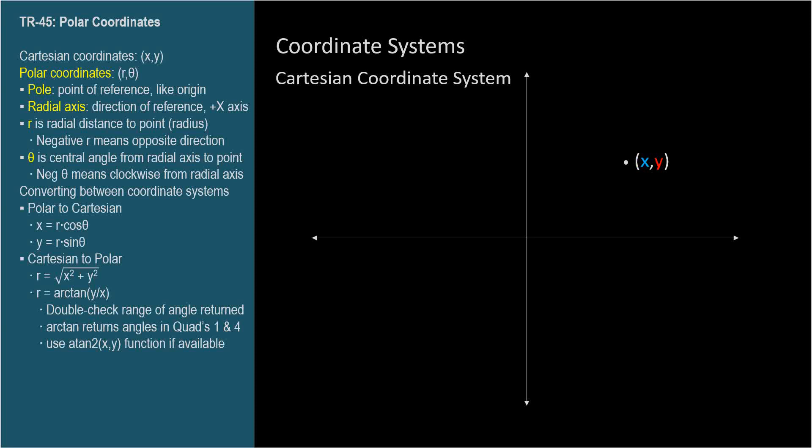The Cartesian coordinate system requires us to have a reference point, called the origin, and a reference direction, the positive x-axis. Coordinates are specified with reference to the origin using the direction established by the positive x-axis.